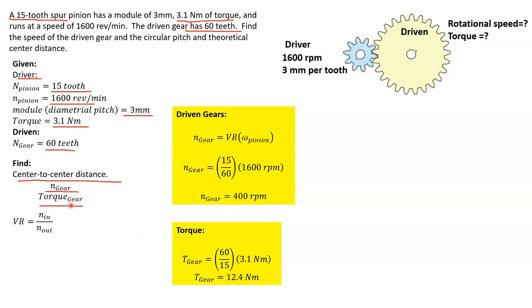Now let's go ahead and find the center-to-center distance. So first, we've got to find the pitch diameter. Again, that's the diameter from the center of the gear all the way up to the pitch plane.